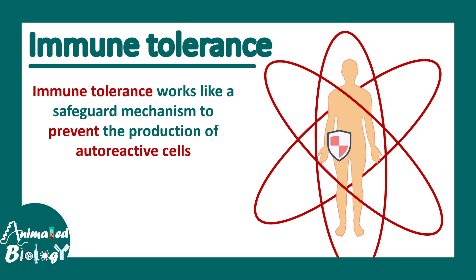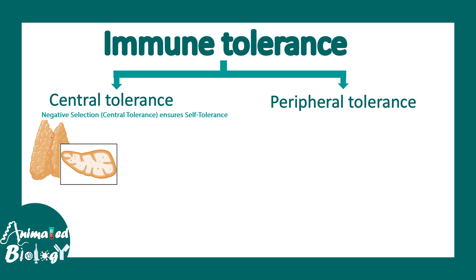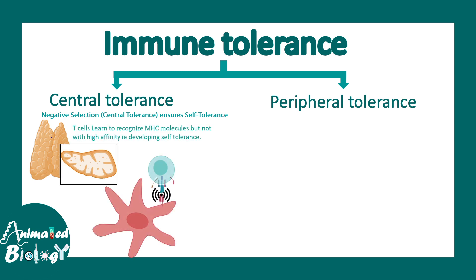There are two broad kinds of tolerance mechanisms in the immune system: central tolerance and peripheral tolerance. For both T cells and B cells, there are central and peripheral tolerances. Central tolerance occurs in the thymus, where due to negative selection, auto-reactive T cells die. Any T cell that recognizes MHC with very high affinity receives a death signal and is eliminated. But in rare cases these cells can evade central tolerance, which is why there is a backup mechanism known as peripheral tolerance.